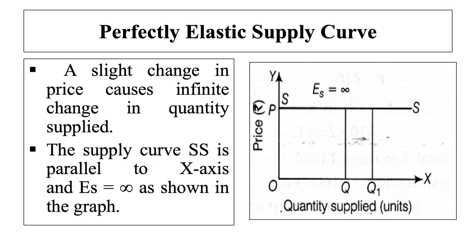The fourth case is when elasticity of supply is infinite. This is known as perfectly elastic supply. In such a case, the supply becomes zero with even a slight fall in price and becomes infinite with a slight rise in price. This indicates that the suppliers of such a commodity are willing to supply any quantity at a higher price. The supply curve is parallel to the X-axis, and the elasticity of supply is infinite, as shown in the graph.